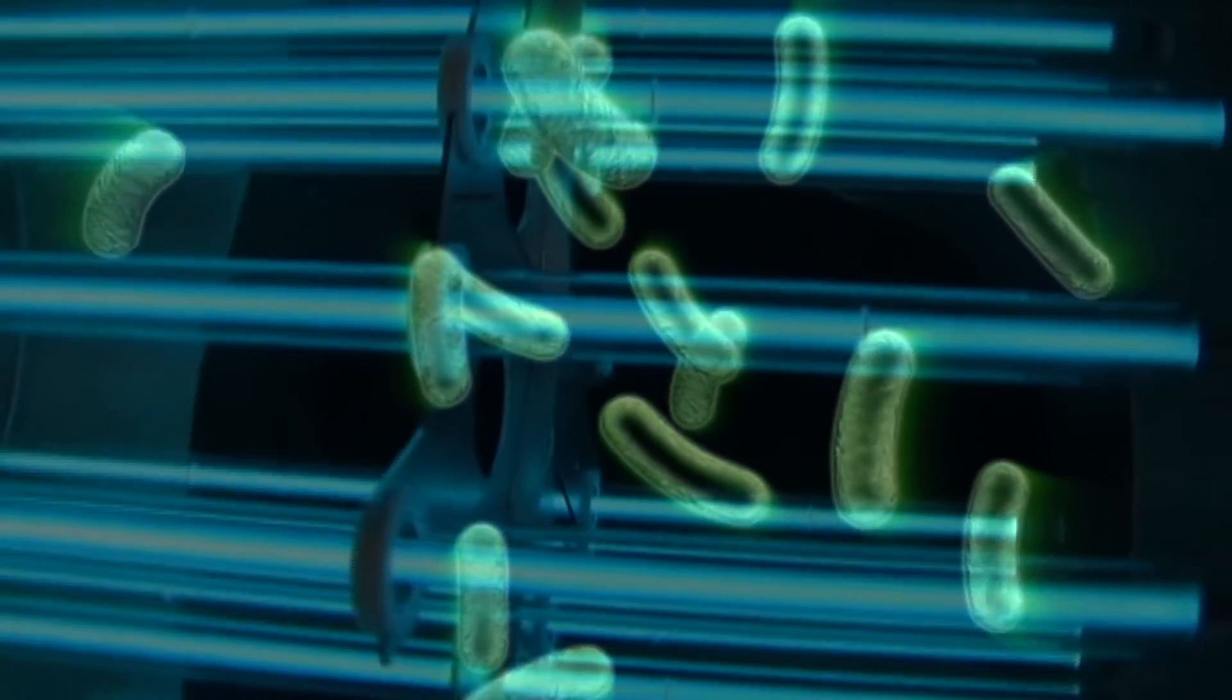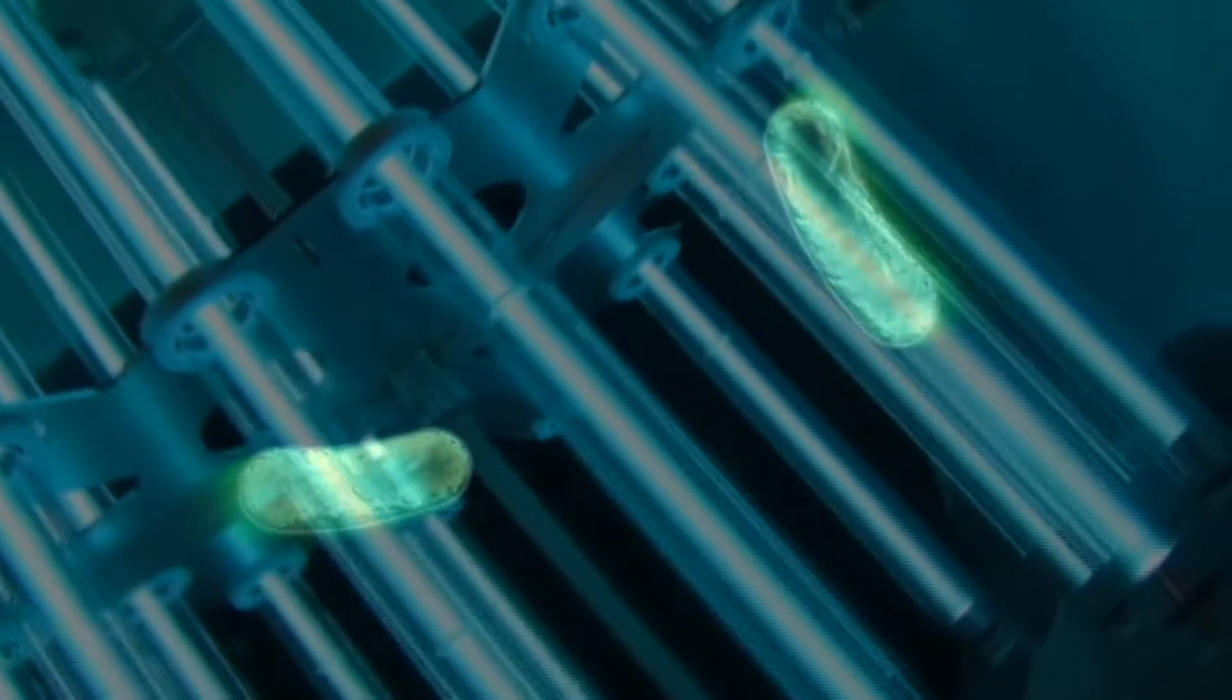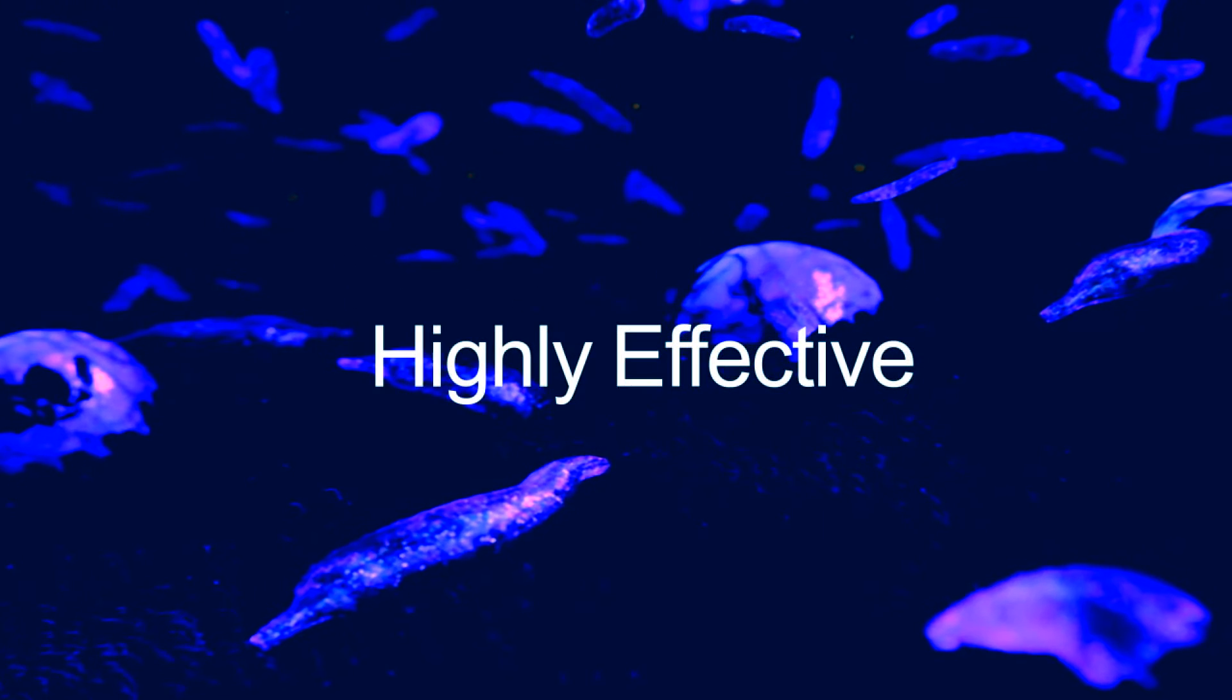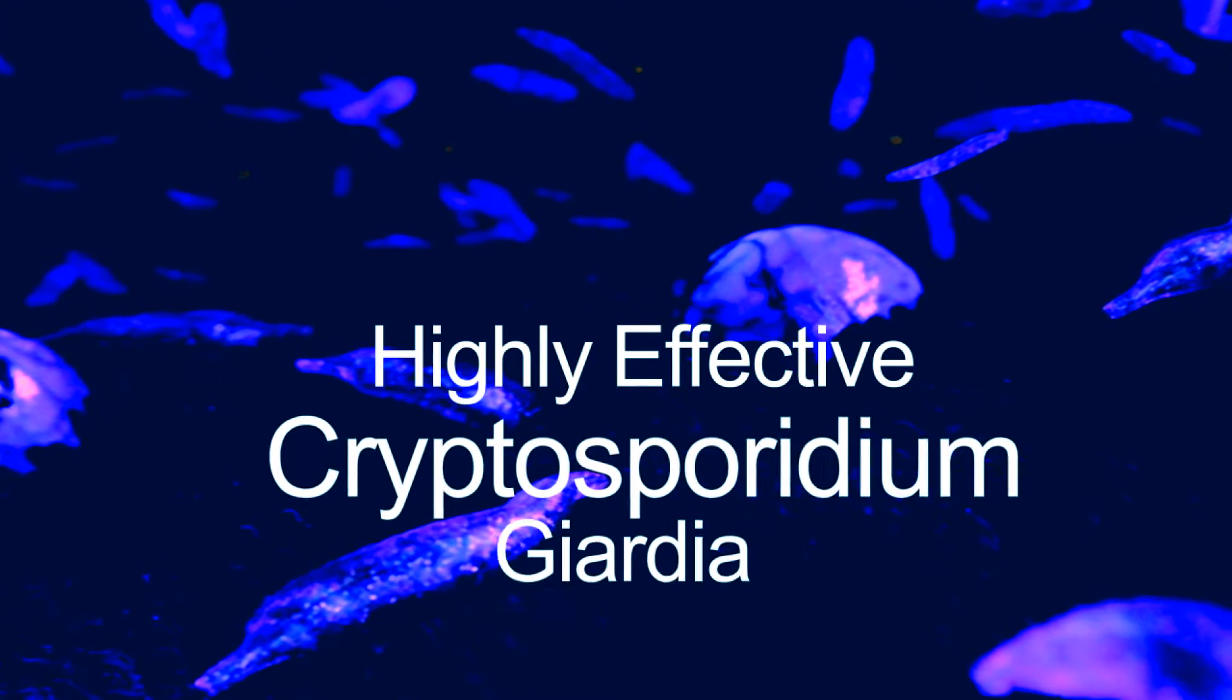UV light disrupts the DNA in pathogens, viruses, and moulds, leaving them unable to perform cellular functions and multiply. UV is highly effective against cryptosporidium and giardia, which are resistant to chlorine and can cause major risks to human health.